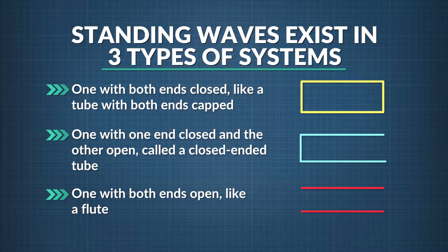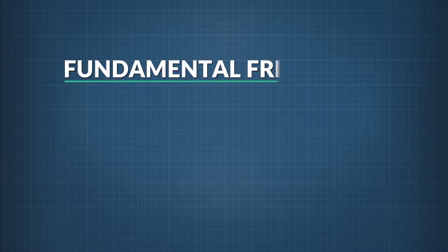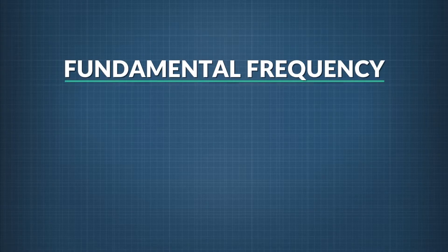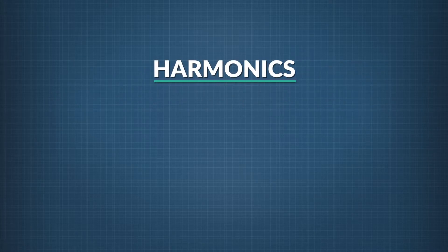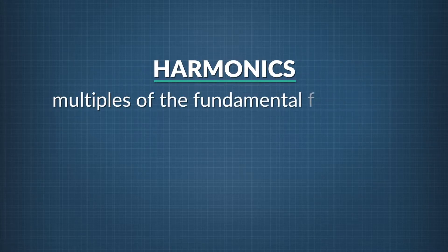The type of system affects what kinds of waves can form inside the tube. For any standing wave system, there is a wave frequency called the fundamental frequency — it is the lowest possible frequency of a wave. This limit has to do with the shape of the wave's boundary. And if you double, triple, or quadruple the fundamental frequency, you have what are called harmonics, multiples of the fundamental.